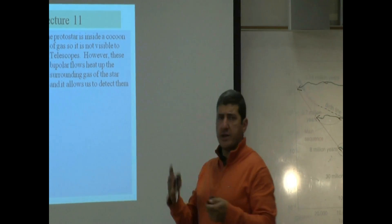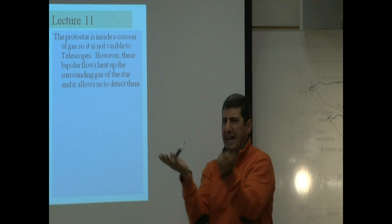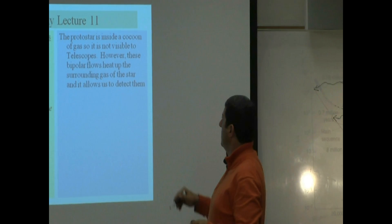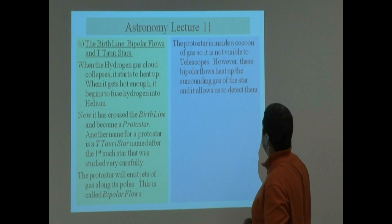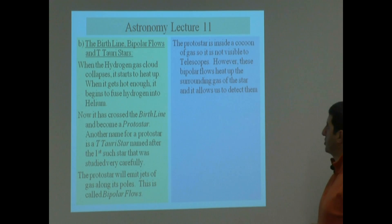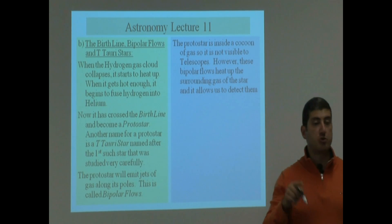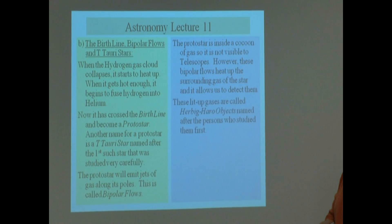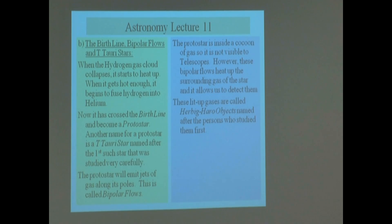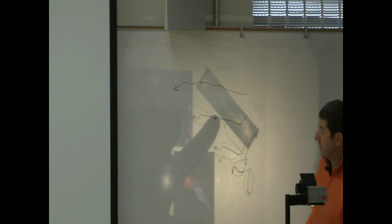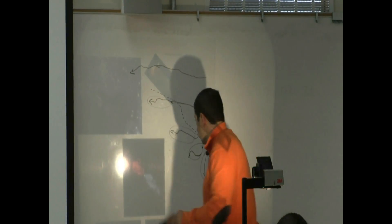The protostar is very hard to see because all this gas is surrounding the protostar. So it's inside of a cocoon of gas. So it is not visible to telescopes. However, these bipolar flows heat up the surrounding gas of the star. And it allows us to detect the protostar. This one is my favorite one to show you usually. I like this one.